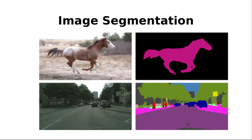There are two images. The first image is a horse. The second one is transportation on a road. The first image is segmented into two parts: the background contains one color and the horse is another color. The horse is running, so it will be split into two parts. The background color is black and the horse is a rose color.